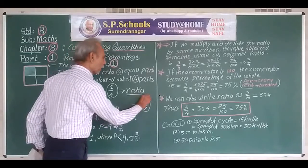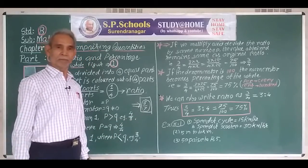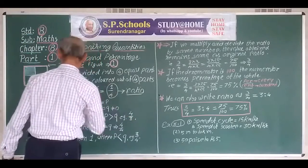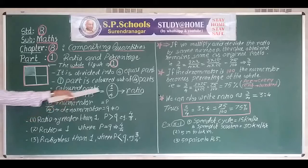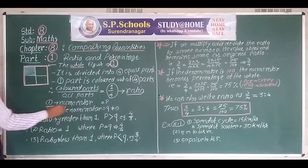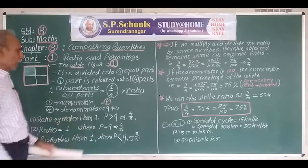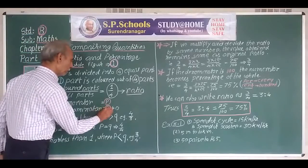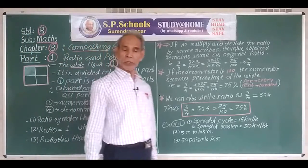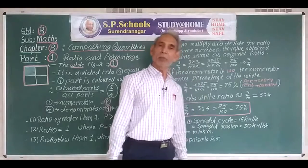These three parts are expressed as such. Here, one is the numerator — let us call it P. Four is the denominator — let us call it Q. The value of Q should not be equal to zero. Now, for the moment we are considering positive numbers only.